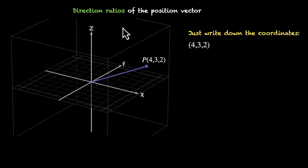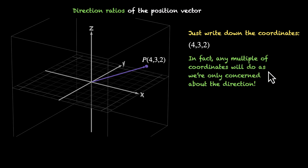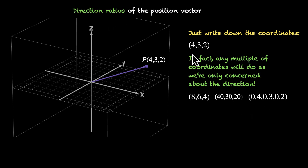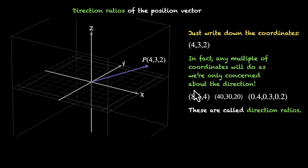But if that's the case, there are many more direction ratios. We're also moving along other points on this line. Any multiple of the coordinates will do, because we're only concerned about direction. A point twice as far from the origin also lies on the same line — moving towards it, you'll pass the original point. So 40, 30, 20 (ten times the original) also gives the direction, and 0.4, 0.3, 0.2 (one tenth) also gives the direction ratio. Any multiple of 4, 3, 2 will do — all of these are direction ratios of this position vector.